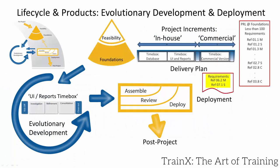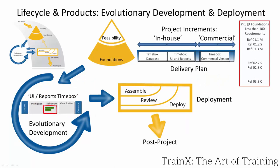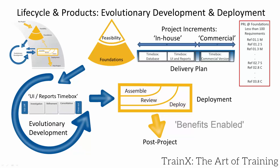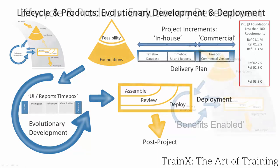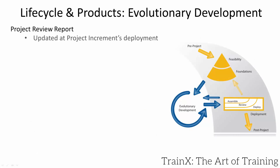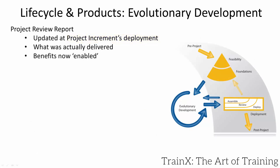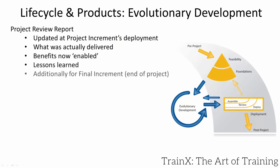Our final project increment — the commercial version — is developed and deployed as the last solution increment. During the deployment phase, assemble encompasses the work to bring together what is to be released. A review informs the final decision to release the solution into operational use. Deploy is the act of putting the release into operational use, enabling the potential benefits of the solution — at this point any plans for business change will be enacted. The project review report is updated to summarise the project, state what has been delivered, the benefits enabled, and any lessons learned.